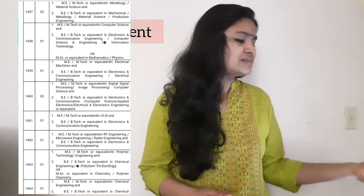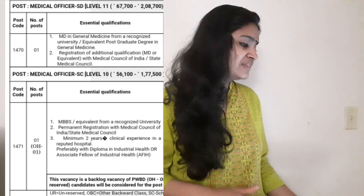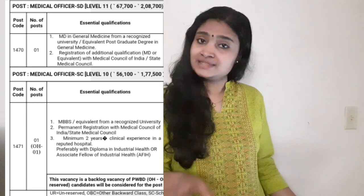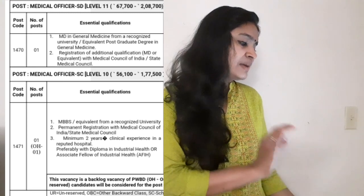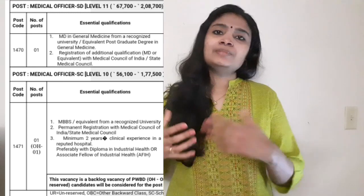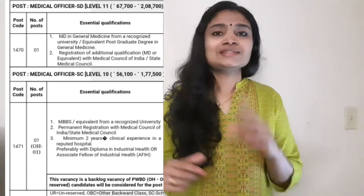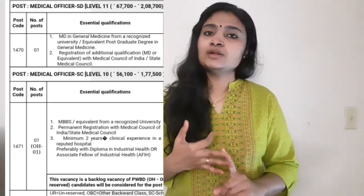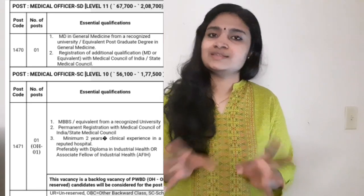A lot of branches are being recruited. For Medical Officer SD, you should have an MD in General Medicine from a recognized university — it is for the health department. For Medical Officer SC recruitment, you should have an MBBS from a recognized university. So the four categories recruiting are: Scientist Engineer SD, Scientist Engineer SC, Medical Officer SD, and Medical Officer SC.